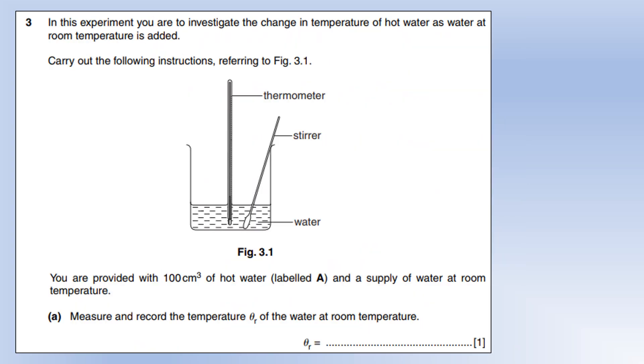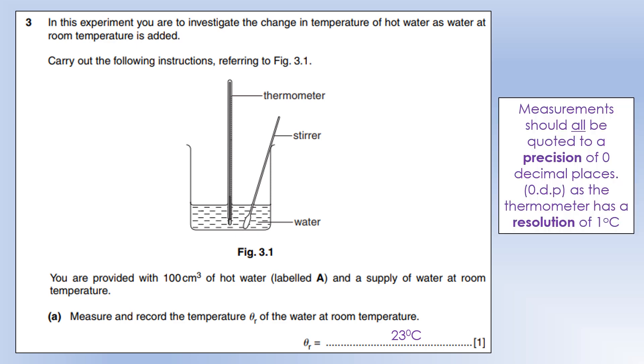In this experiment you are going to investigate the change in temperature of water at room temperature. You're provided with 100 centimeters cubed of hot water and a supply of water at room temperature. I got 23 degrees, and room temperature is usually between 20 and 25. Our thermometer's resolution is one degree, so all temperature measurements should be to one degree with no decimal places.